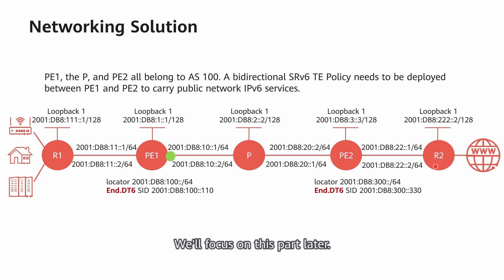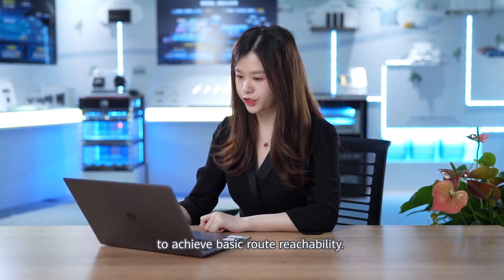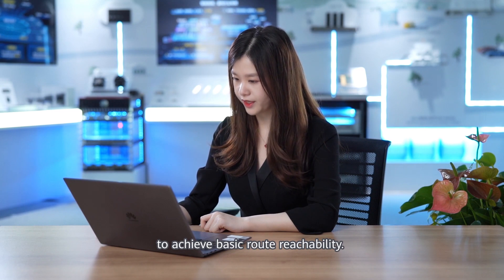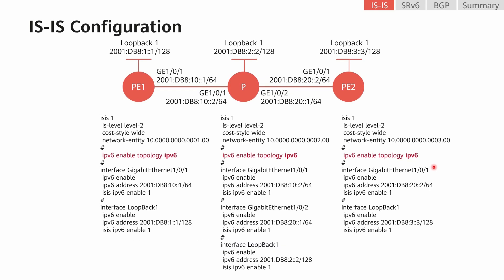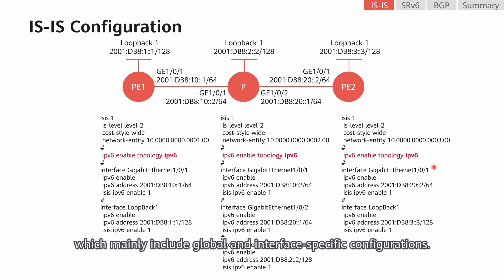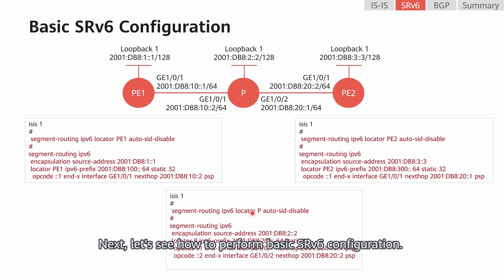We'll focus on this part later. The first step involves configuring IS-IS to achieve basic route reachability. This is because SRv6 is implemented through IS-IS extensions. These devices require similar IS-IS configurations, which mainly include global and interface-specific configurations. Next, let's see how to perform basic SRv6 configuration.